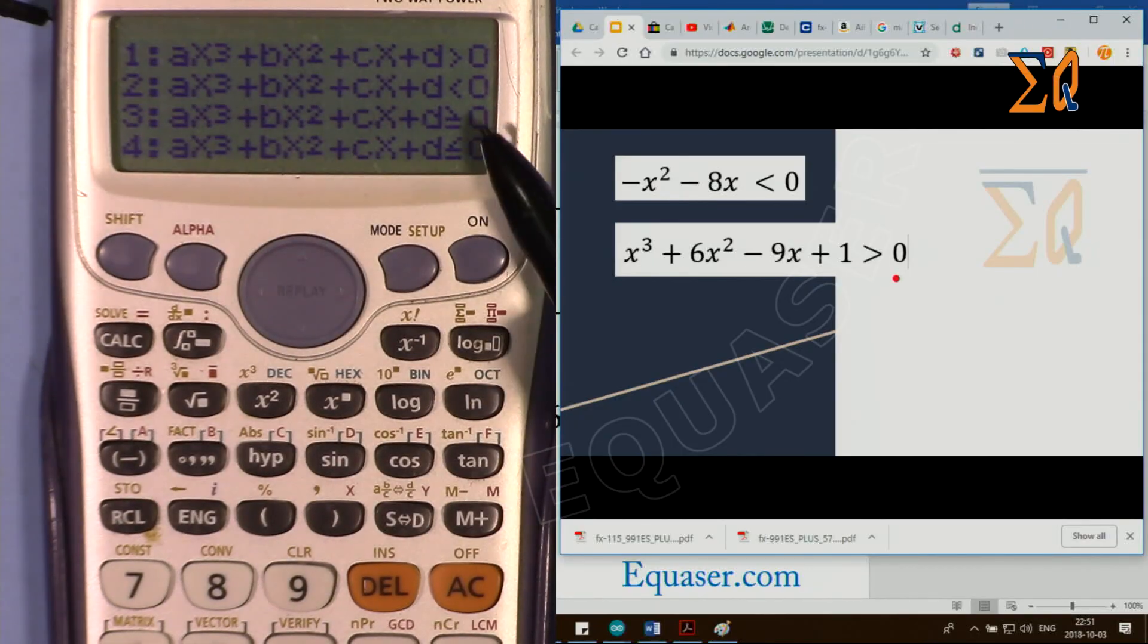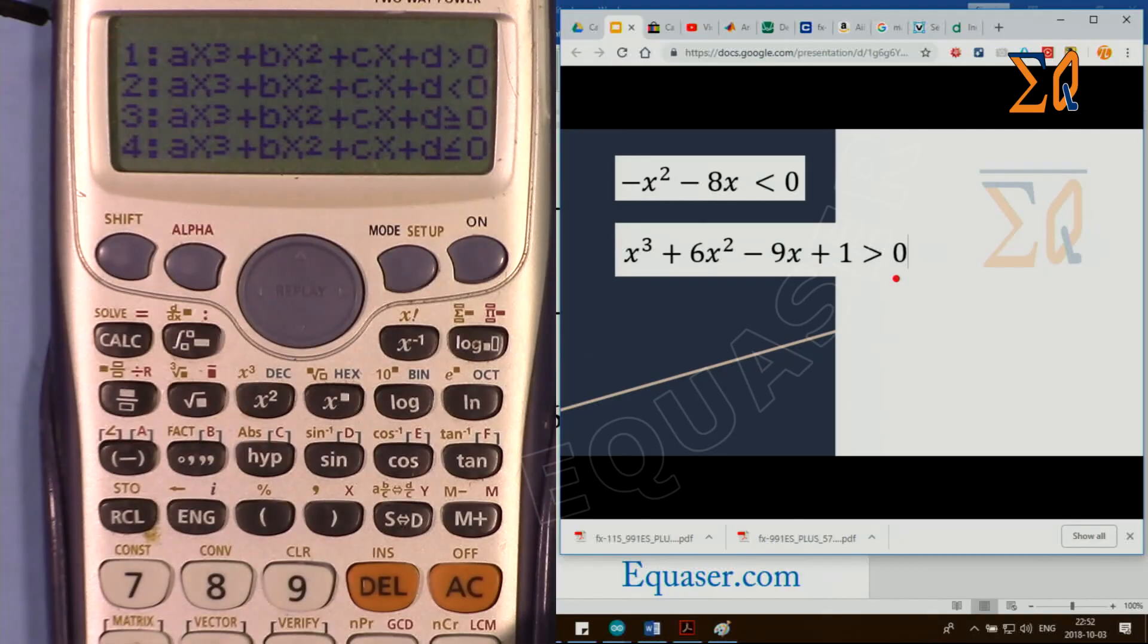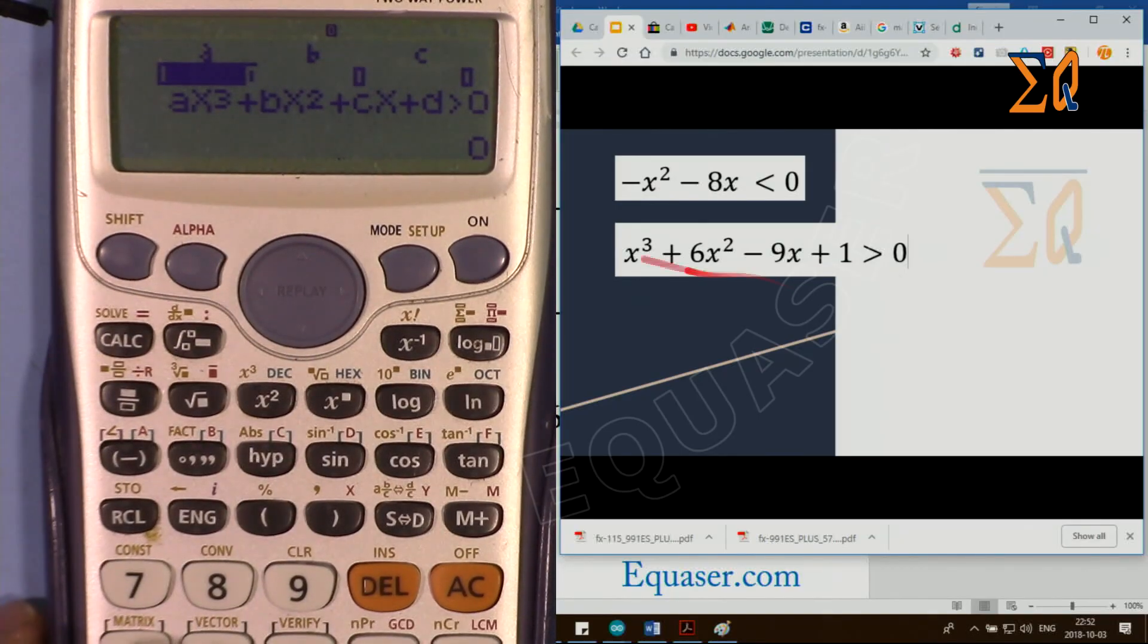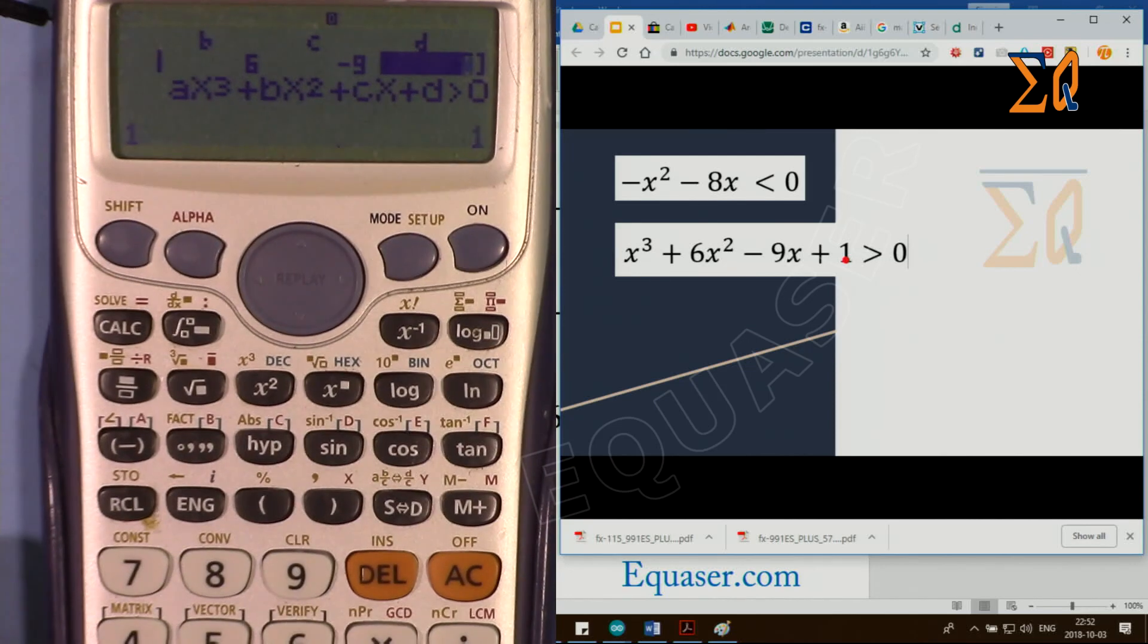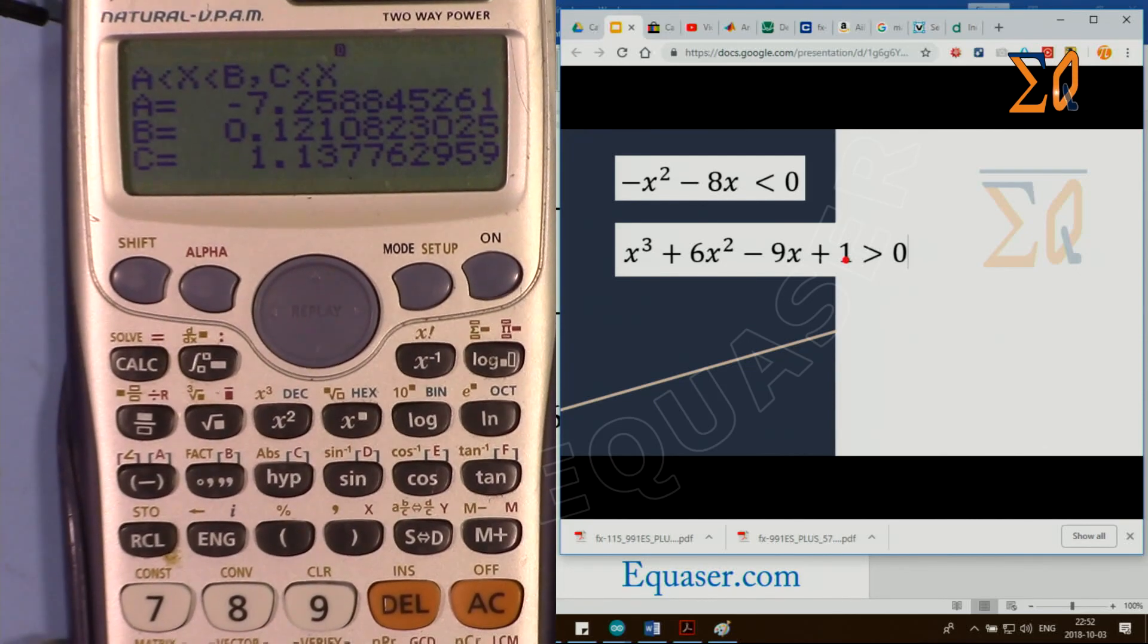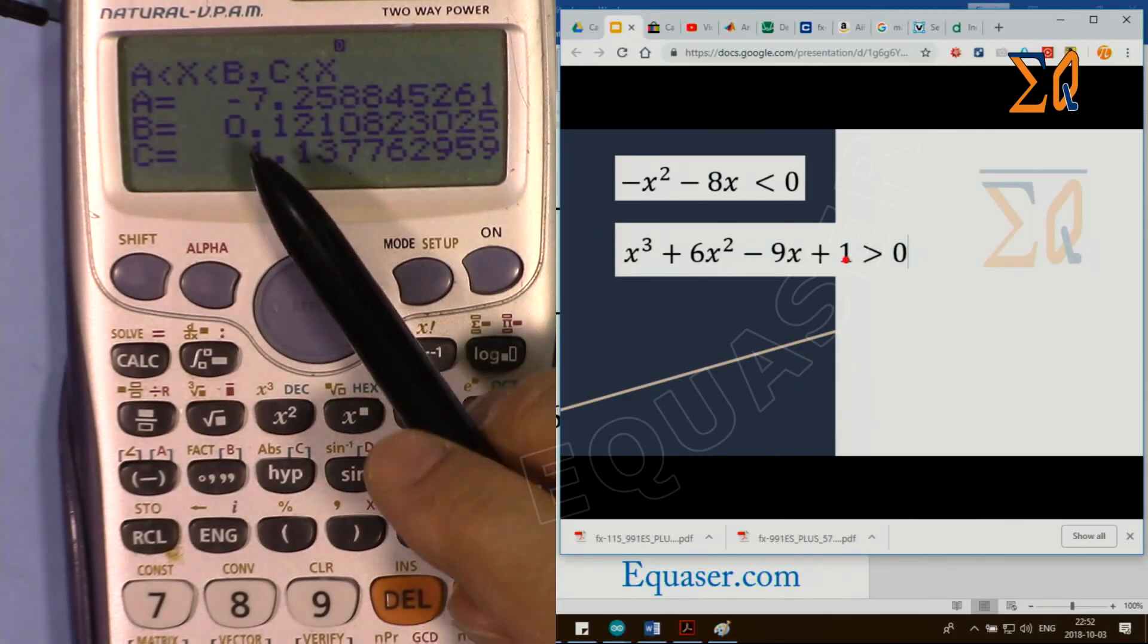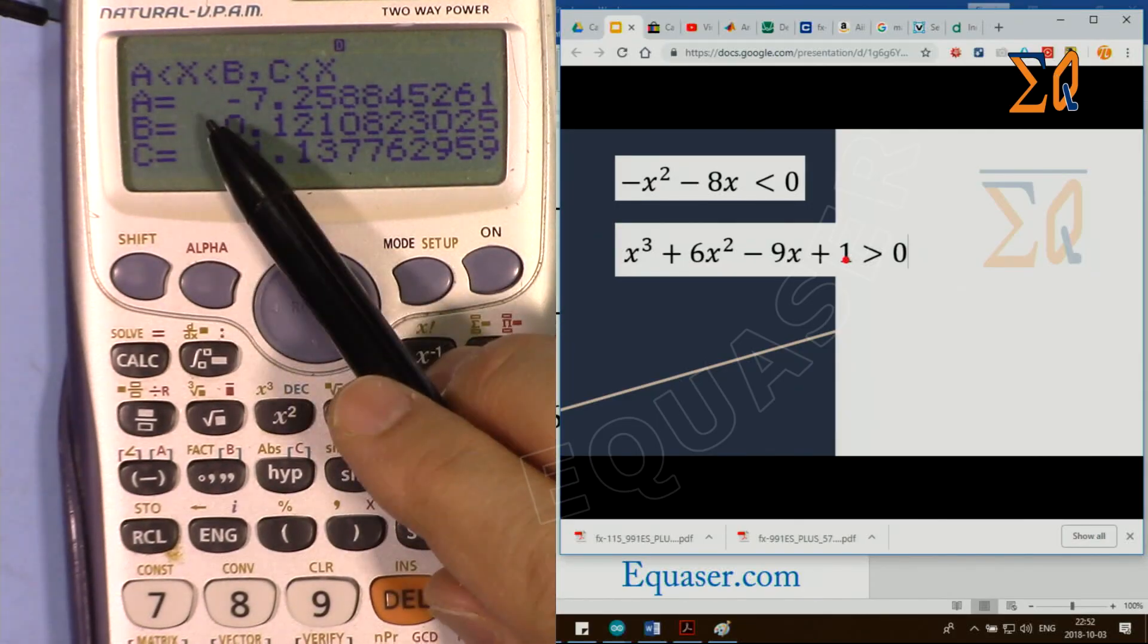Now press 1 and enter the coefficients a, b, c, and d. So a is 1, and b is 6, c is −9, and d is 1. Then press equal.